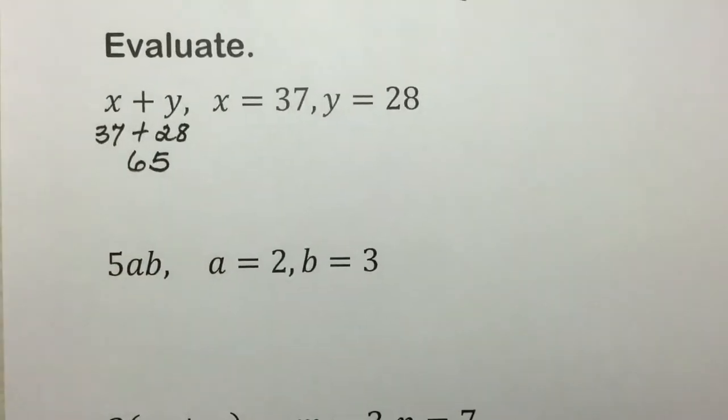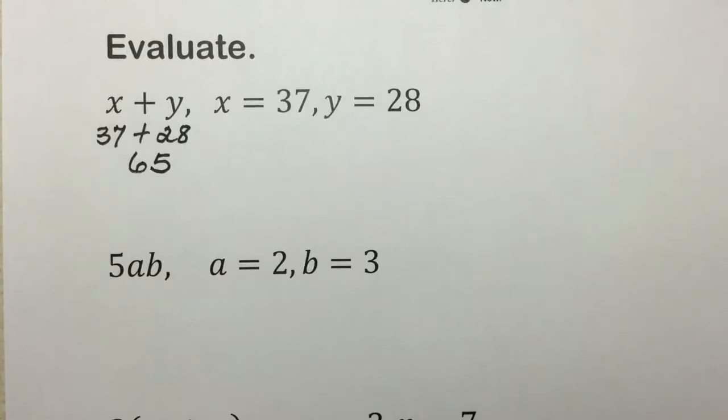In this next example, we have 5ab, the implied multiplication when we have a number or a constant next to a variable and a variable adjacent to a variable. So we will replace those variables with the indicated values given. This results in 5 times a, which has a value of 2, times b, which has a value of 3. And then we'll do the indicated multiplication. 5 times 2 gives us 10, and 10 times 3 gives us 30.